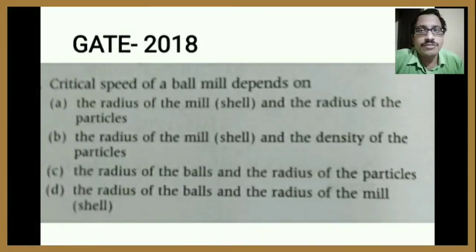Hello everyone, today we will discuss one important question from GATE 2018. The critical speed of a ball mill depends on option A: the radius of the mill and the radius of the particle.